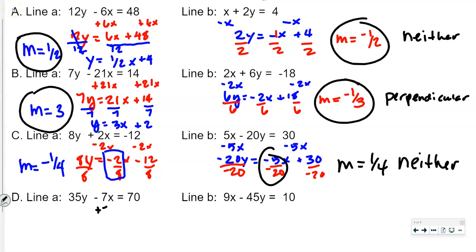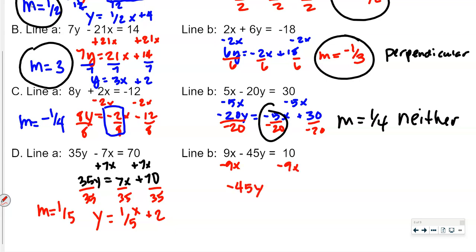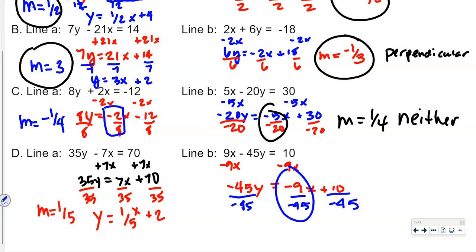One more pair: adding 7x to both sides gives 35y equals 7x plus 70. Dividing by 35 gives y equals 1 fifth x plus 2, so slope is 1 fifth. For the other equation, subtracting 9x gives negative 45y equals negative 9x plus 10. Dividing by negative 45 — negative over negative is positive, and 9 goes into 45 five times — gives m equals 1 fifth again. Both slopes are equal, so these lines are parallel.